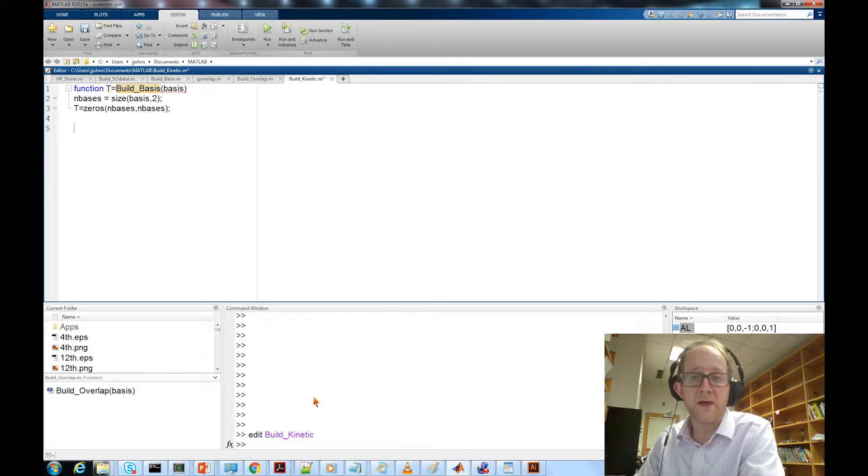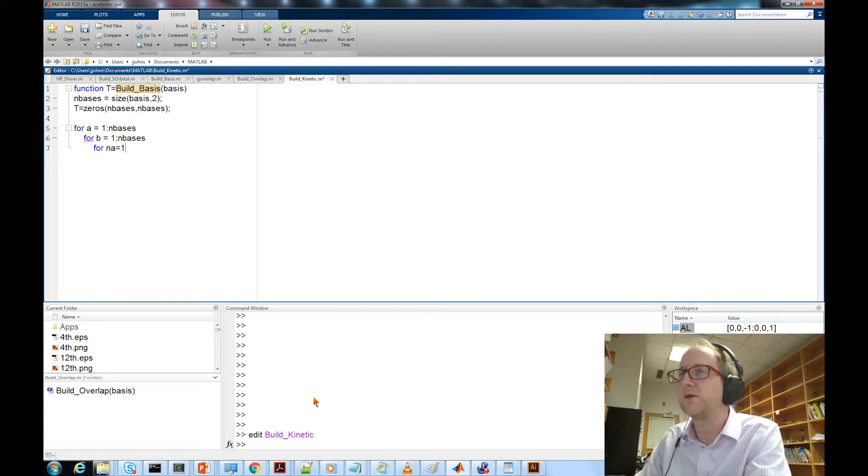Once we've done that, we're ready to start adding numbers to the matrix elements. Let's loop over all of our basis functions a, a equals one to n basis, and loop over b basis. Then once we have our a and b basis functions, we need to loop over all the individual primitive Gaussians. For na equal one to basis a dot n, for nb equal one to basis b dot n.